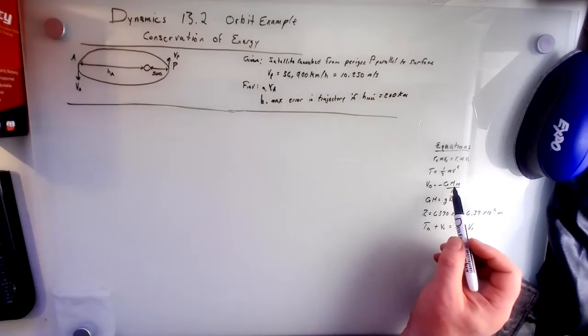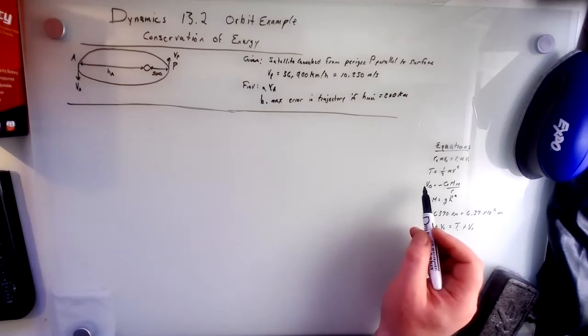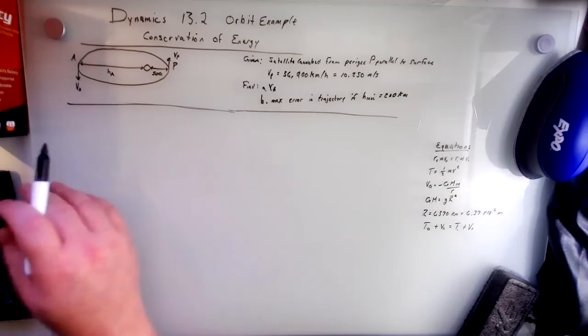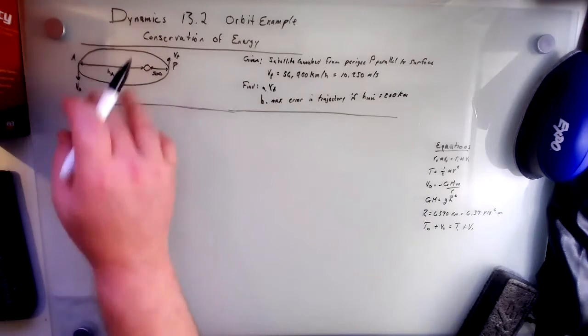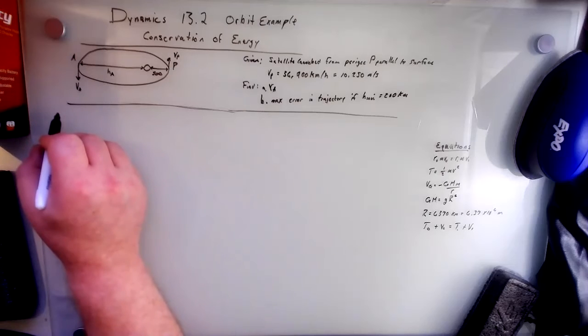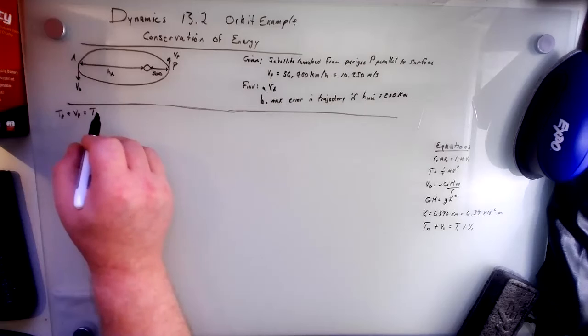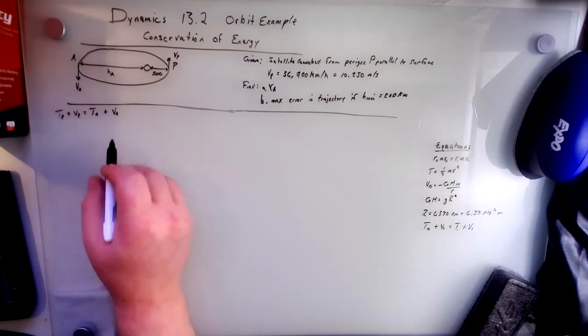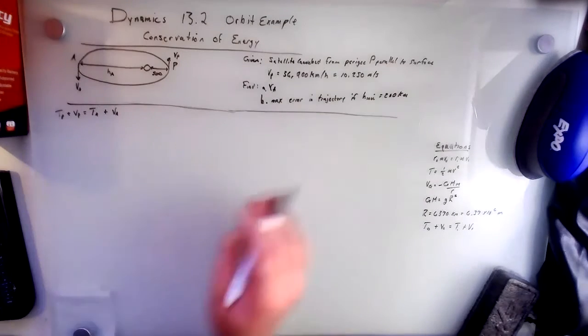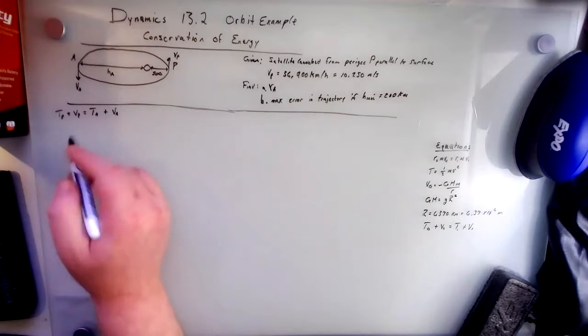It's just minus big G, big M, little m over R, and that is the potential energy due to gravity. So our equation is TP plus VP equals TA plus VA, right? We just substitute our values in for these.